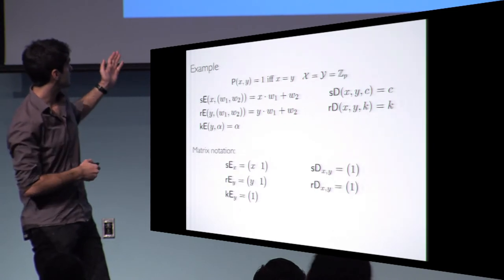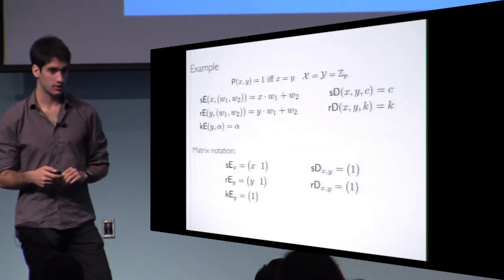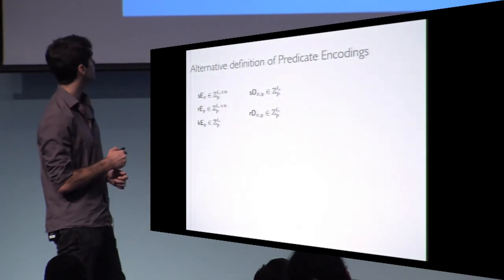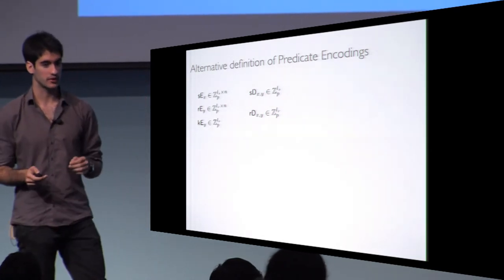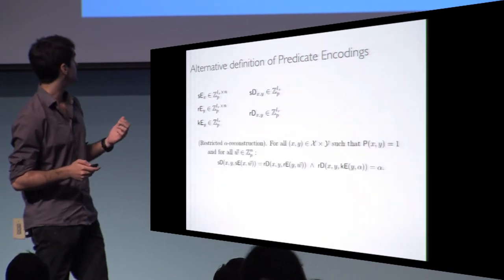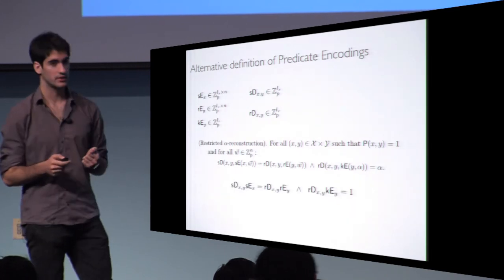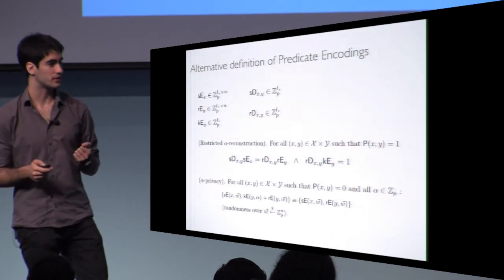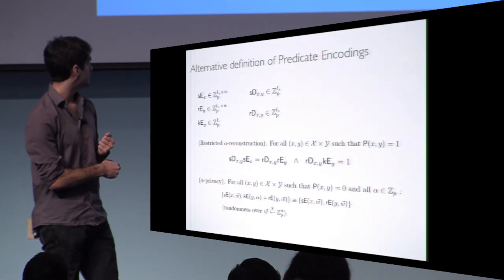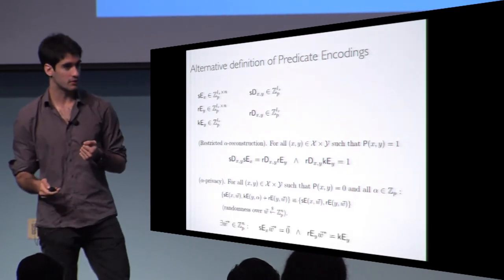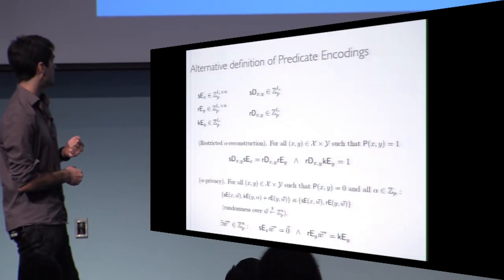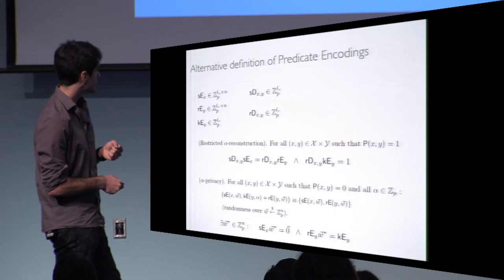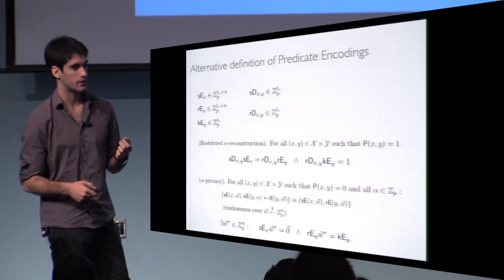In matrix notation the encoding looks like this. We are now ready to redefine predicate encodings in the way we do in our work. Starting from the five algorithms and using matrix notation, we can drop the explicit linearity property. Alpha reconstruction becomes an equality between matrices. Alpha privacy can be expressed as an algebraic property: we show that the condition that two distributions are identical is completely equivalent to the existence of a solution of a certain linear system of equations. This algebraic characterization is what allows us to prove all further results in the paper.